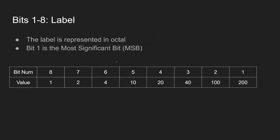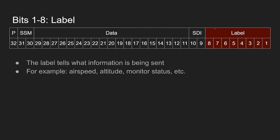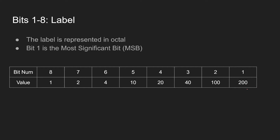In ARINC-429, the label is represented in octal, which is a little tricky, but we're going to be going over it here. For this standard, bit 1 is going to be our most significant bit, and bit 8 is going to be our least significant bit. These eight bits are broken out from the big table shown here. The way this works is: bits 1 and 2 are our hundreds place, representing 100 and 200. Bits 3 through 5 are our tens place, so those are 10, 20, and 40. And bits 6 through 8 are our ones place, so those are 1, 2, and 4. We take the value of each bit that's set to 1 and add them all together.